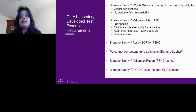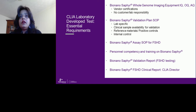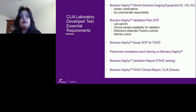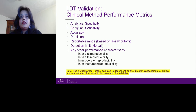As part of a CLIA LDT, there are essential requirements: equipment IQ, OQ, and AQ, where the vendor provides certifications for installation. However, every lab must have its own validation, a standard operating procedure, and must source clinical samples for validation — asking whether we have enough positive controls and how to measure performance metrics. We also need personnel competency, training, and a validation report signed off by a CAP or CLIA director.